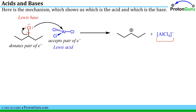We can then apply the Lewis definition: the base is the lone pair donor — in this case the chlorine-containing species — and the acid is the lone pair acceptor, in this case the trichloroaluminum species.